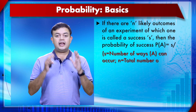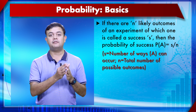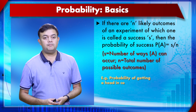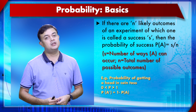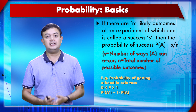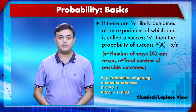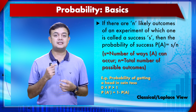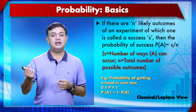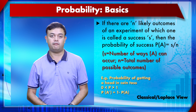Formally, if there are n equally likely outcomes of an experiment of which s is the number of successes, then P(A) = s/n. This is Laplace's classical view. For example, probability of getting a head in a coin toss is 1/2 = 0.5. Probability always lies between 0 and 1 — never negative, never more than 1. The complement rule states: P(A') = 1 − P(A). For example, probability of not getting a head = 1 − 0.5 = 0.5.